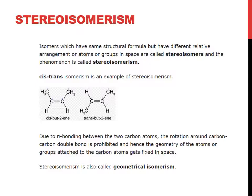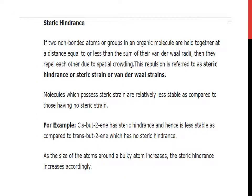Stereoisomerism is also called geometrical isomerism. Now, what is steric hindrance? If two non-bonded atoms or groups in an organic molecule are held together at a distance equal to or less than the sum of their Van der Waals radii, then they repel each other due to spatial crowding. This repulsion is referred to as steric hindrance or steric strain. Molecules which possess steric strain are relatively less stable compared to those having no steric strain. For example, cis-but-2-ene has steric hindrance and is less stable compared to trans-but-2-ene. As the size of atoms around a bulky atom increases, steric hindrance increases accordingly.